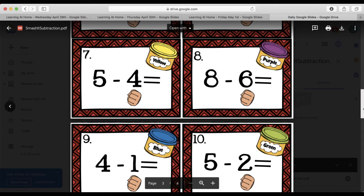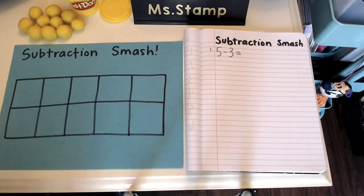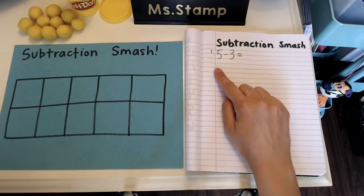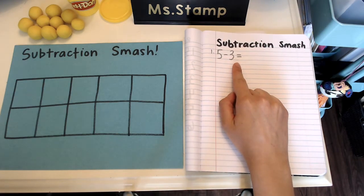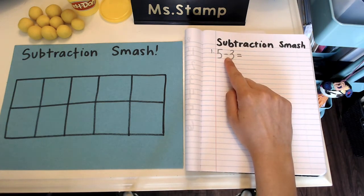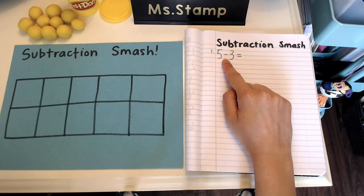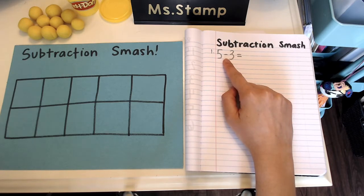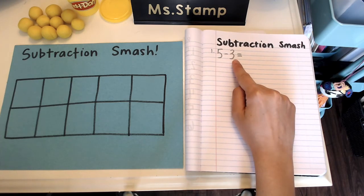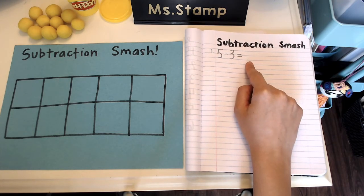If not, just do what I'm going to do. I'm going to use the problems that are on those cards. So the first one is five minus three. Remember in subtraction we use a minus sign. Addition we used a plus sign, subtraction we use a minus sign and that means that we're going to take away.